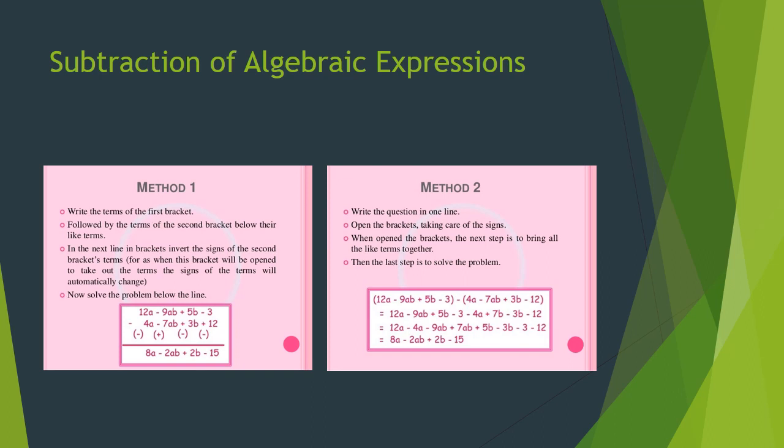Subtraction of algebraic expressions: to subtract a literal y from another literal x, we add the negative of y, that is minus y, to x. Similarly, we subtract an algebraic expression from another by adding the negative of that expression. To find the negative of a monomial, we change the sign of its coefficient. There are two ways of subtracting: the horizontal method and the column method. To subtract an algebraic expression from another, add the negatives of the terms of the expression being subtracted, then proceed as in the case of addition.